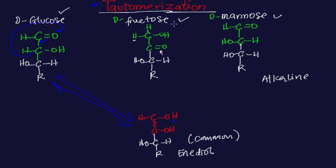Any sugar that possesses an anomeric carbon can undergo tautomerization. That's why I'm using glucose, fructose, and mannose — because glucose, fructose, and mannose all have what we call an anomeric carbon. The anomeric carbon in glucose is carbon number 1, so it can undergo a change in hydrogen atom or shift in bond. In the case of fructose, the anomeric carbon is carbon number 2, and it can undergo a shift in bond to form enediol.